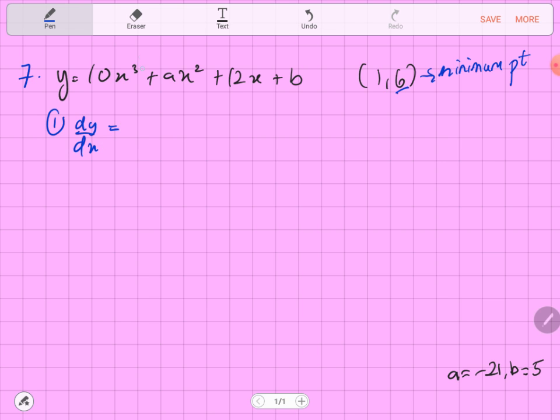What do we get here? It will be 30x square plus 2ax plus 12. So this is our dy/dx.